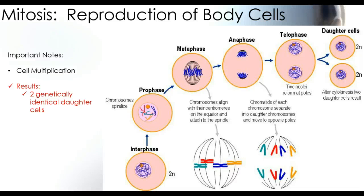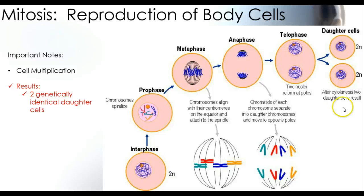You just watched a video showing mitosis in a much clearer fashion. A couple of things to note: for the reproduction of body cells, we start in interphase with a regular cell, but we end with two exact copies. It's very important to note that during mitosis, the results of cell multiplication are two genetically identical daughter cells — the cells that come from the original cell are called daughter cells.